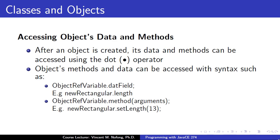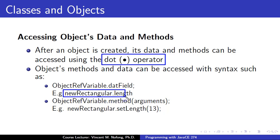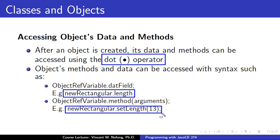To access an object's data and methods after it's been created, we simply use the dot operator. In our case, where we created an object called newRectangular, if we want to get its length we use the dot operator with 'length'. If we want to set or change its length, we call 'newRectangular.setLength' and put the number we want to set the length to.